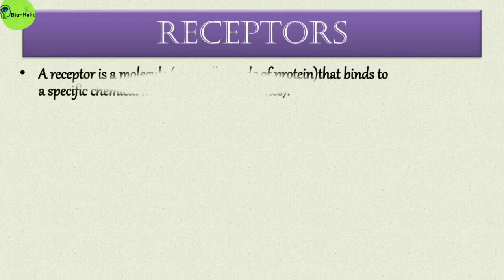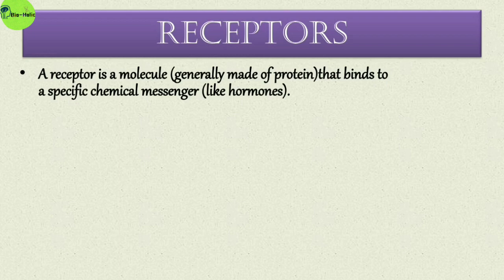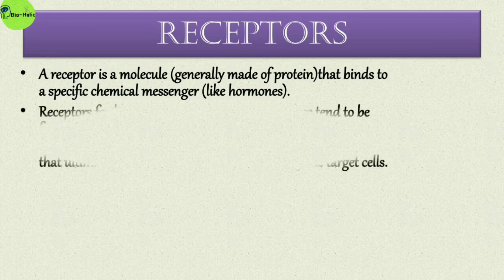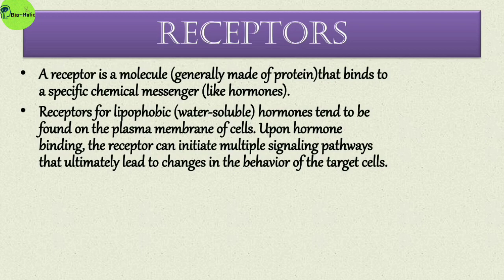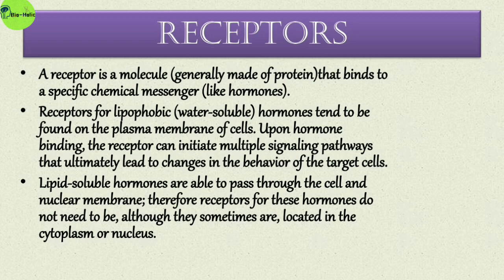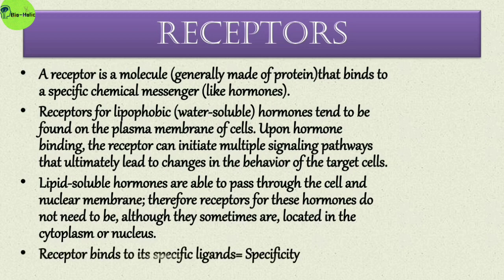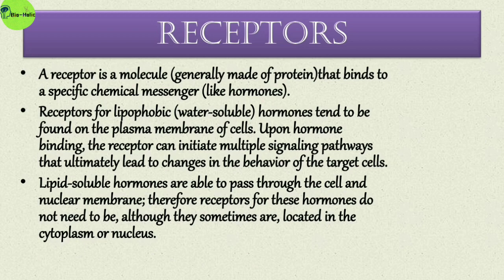Now let's learn about receptors. A receptor is a molecule generally made up of proteins that binds to a specific chemical messenger such as a hormone. Receptors for lipophobic, that is water soluble, hormones tend to be found on the plasma membrane of cells. Upon hormone binding, the receptors can initiate multiple signaling pathways that ultimately lead to changes in the behavior of the target cells.